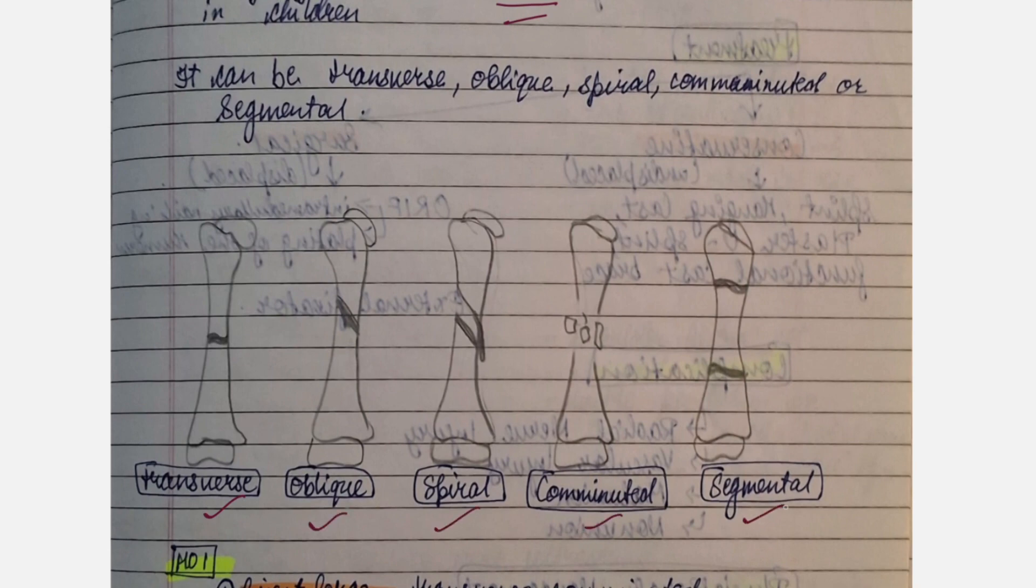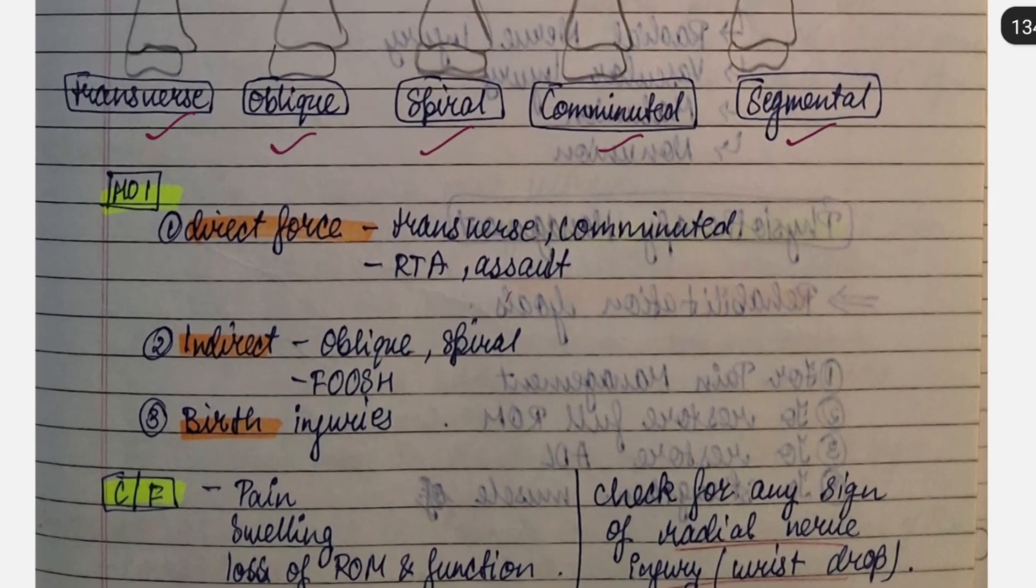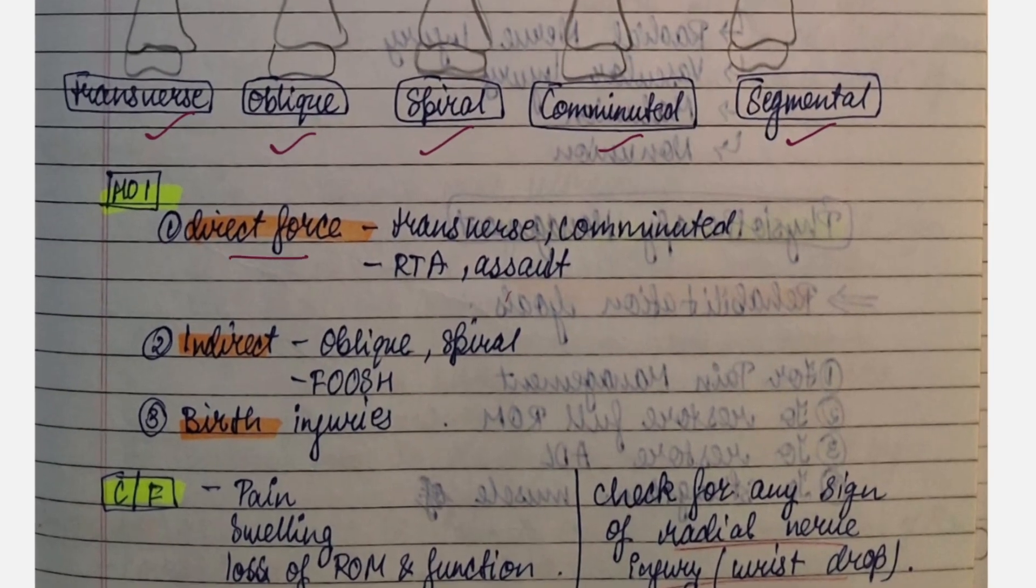The mechanism of action is direct force, that is transverse or comminuted fracture. It can happen in a road traffic accident or in any assault.